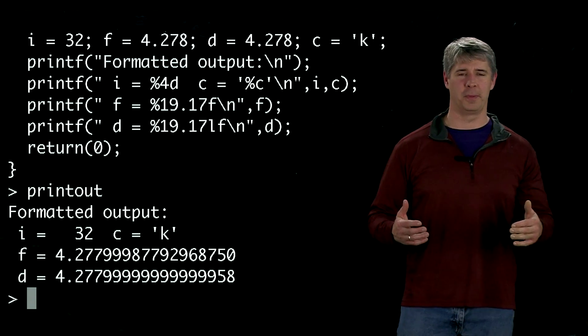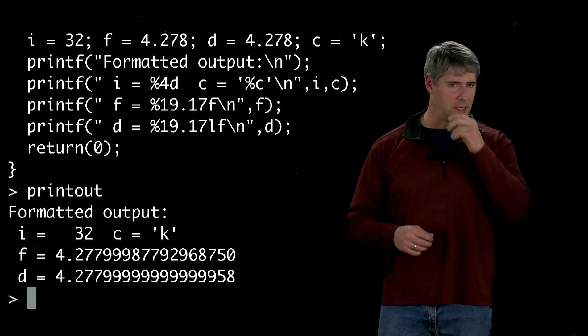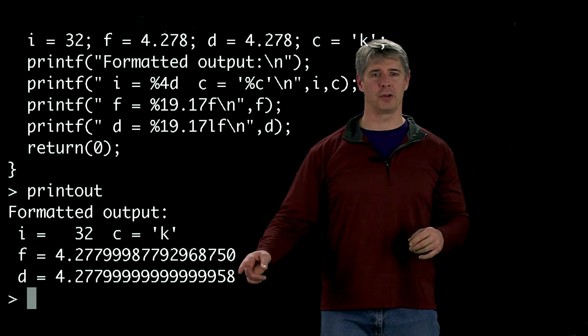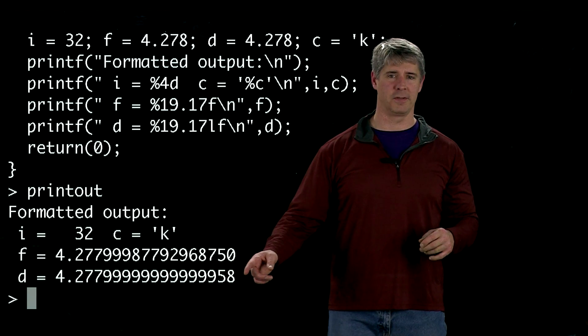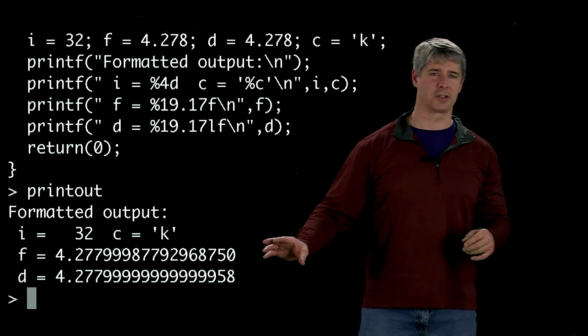There's a limited number of bits to represent, so some values are approximated. But what you'll also see is that the double came closer to approximating 4.278 than the single precision float did, because again, it has greater resolution.